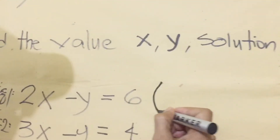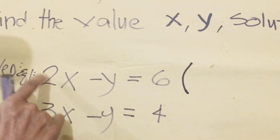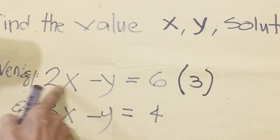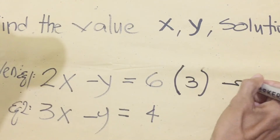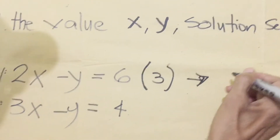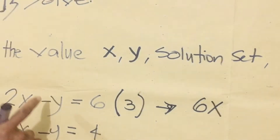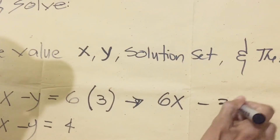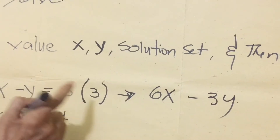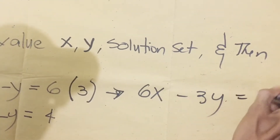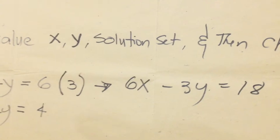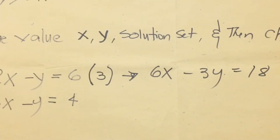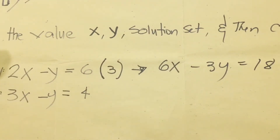My first approach is to multiply the first equation by 3. The new equation becomes 6x, then negative y times 3 is negative 3y, and negative 3 times 6 equals 18. But if we copy the second equation — 3x minus y equals 24 — there is still no variable to be eliminated.